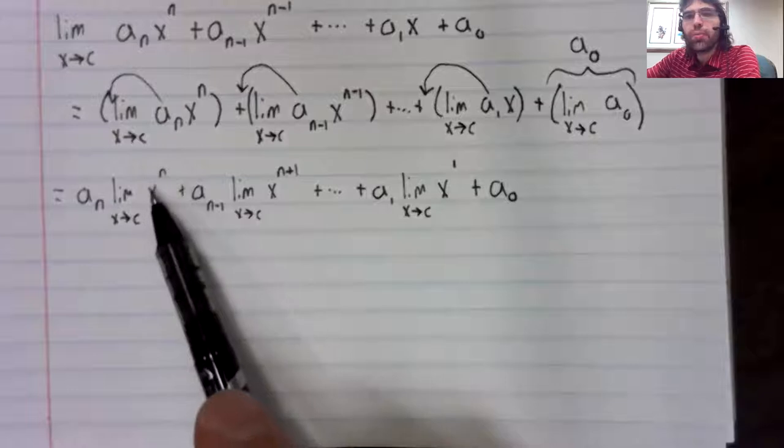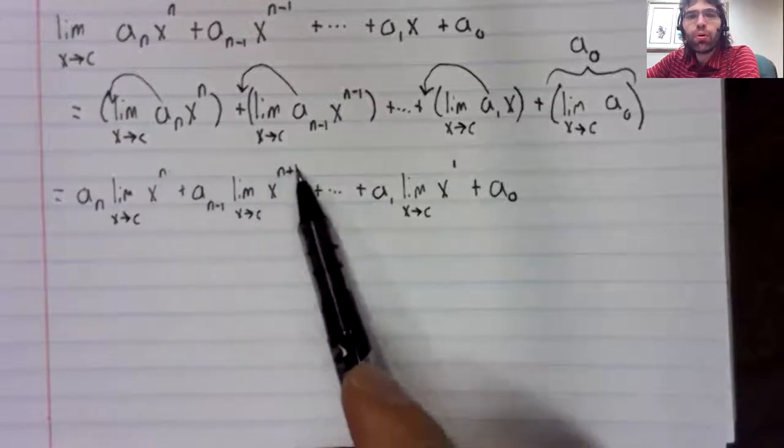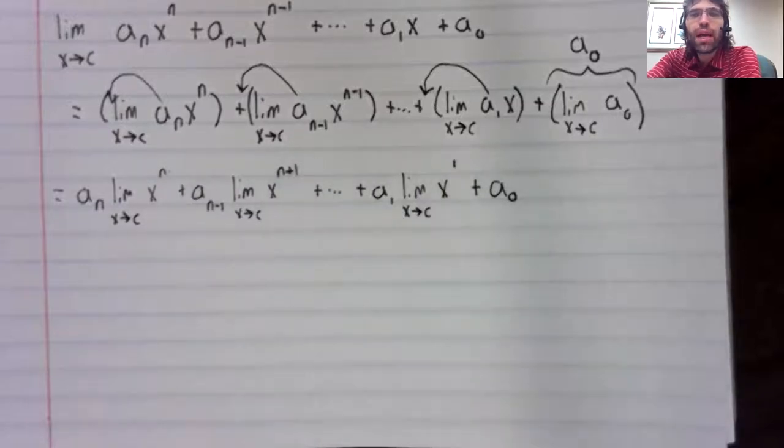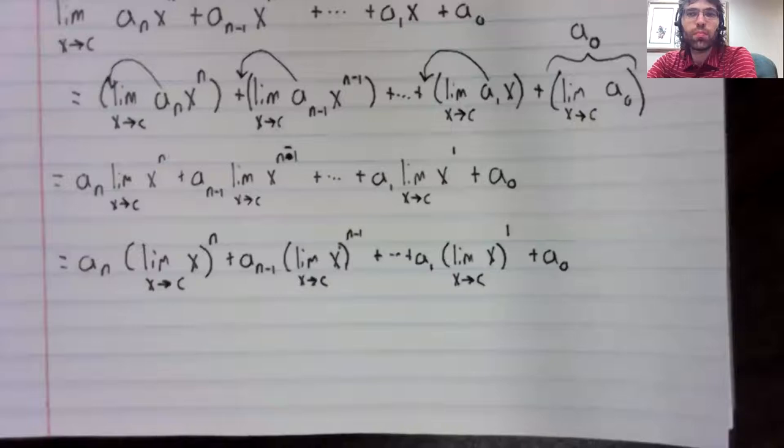Now, we've got the limit of powers. And our power rule says the limit of a power is the power of the limit. Finally, the limit as x approaches c of x is c.